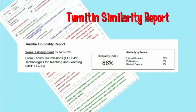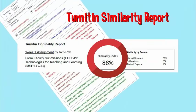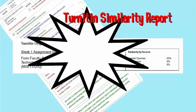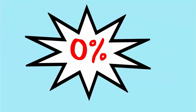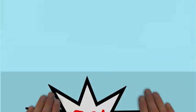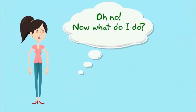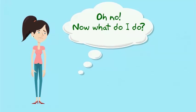But when you get your paper back, your instructor said you had a similarity index of 88% and she gave you a zero on your assignment. Oh no — now what do I do?